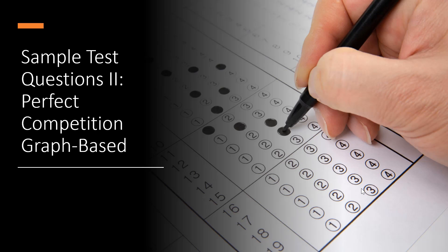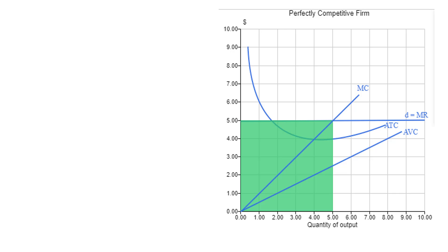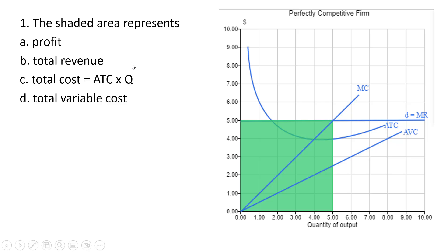Hello, this is part two of sample test questions dealing with perfect competition. We have the following perfectly competitive firm here. The shaded area represents total revenue. Answer B.